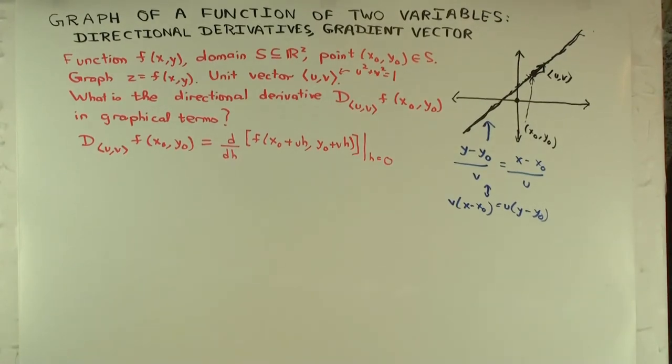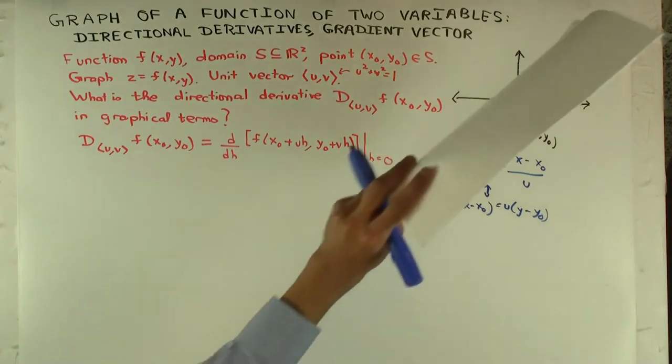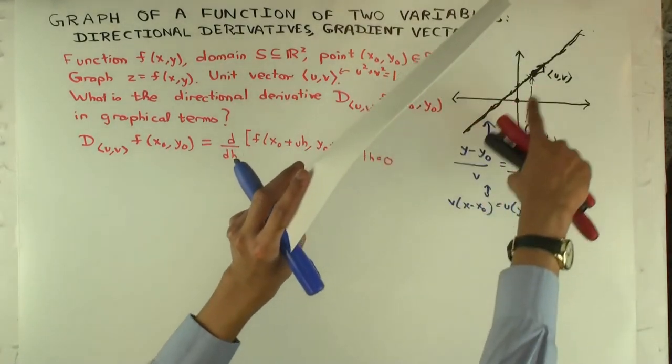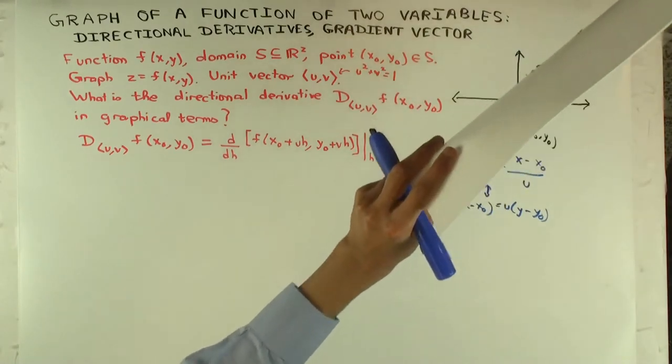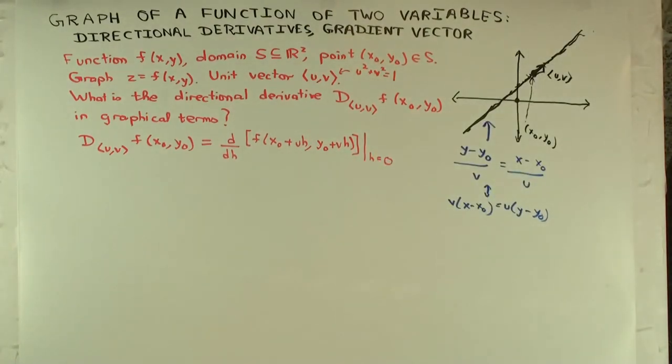And so what's the equation of the plane? Well, it will actually be the same equation. This is the equation of this line in R², but the equation of the plane in R³ will be the same because the z coordinate is freely allowed to vary. So that's the equation of the plane.